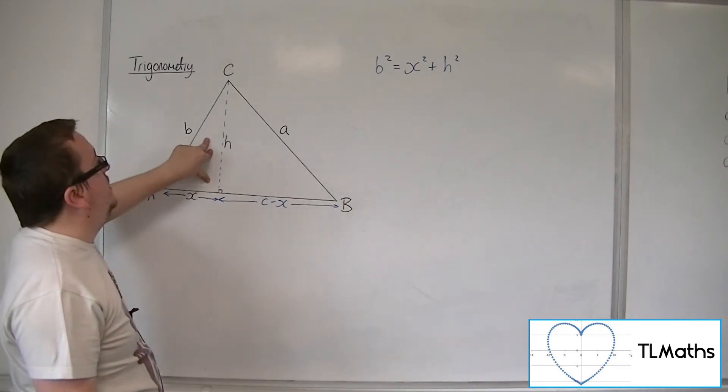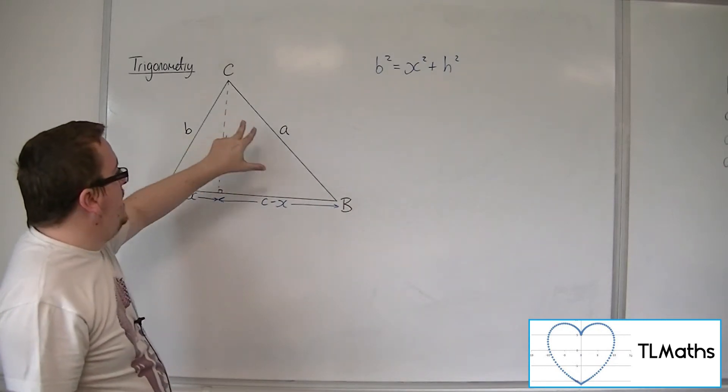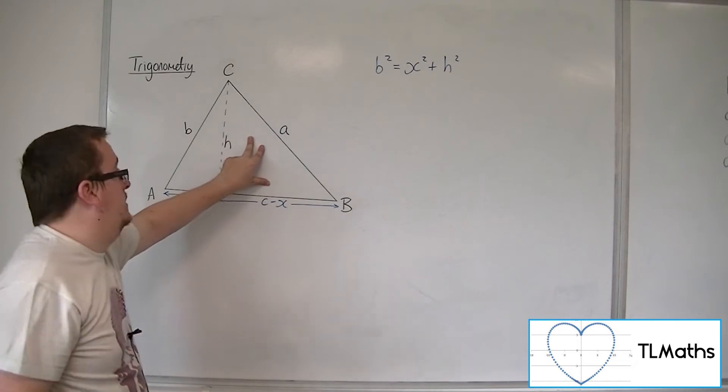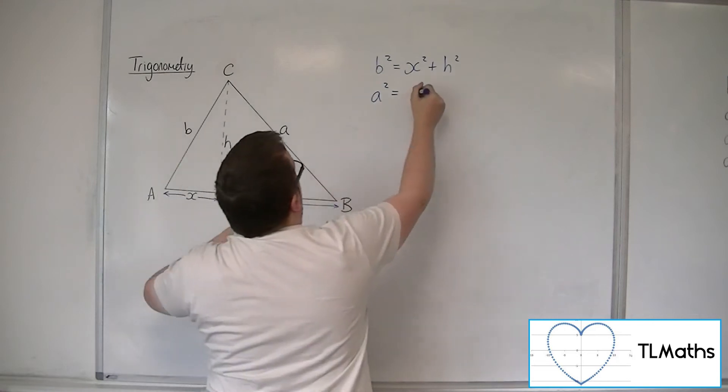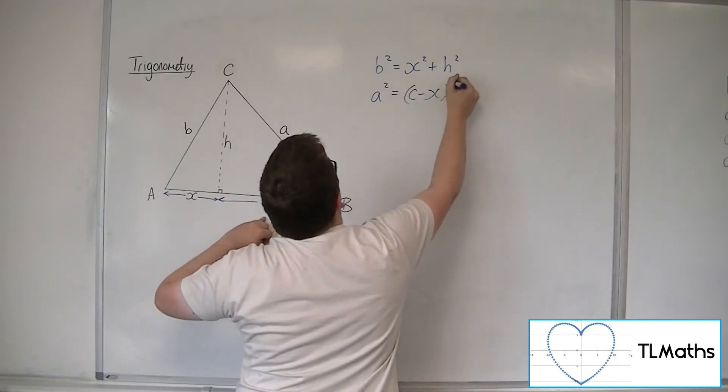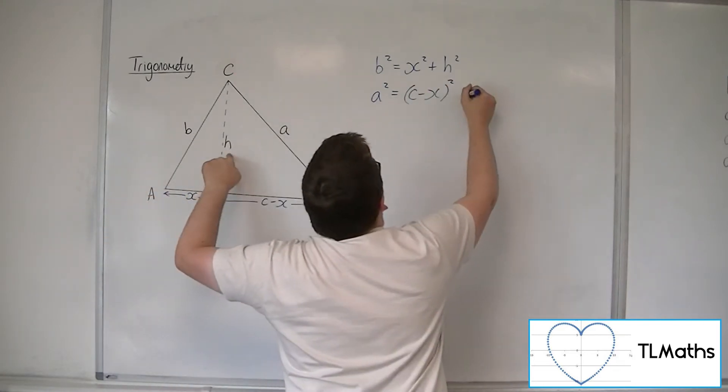If we use Pythagoras for the second triangle, then we've got that A squared must be equal to C minus X squared plus H squared.